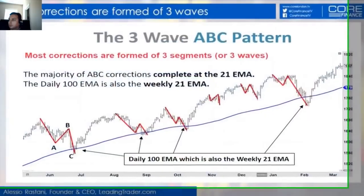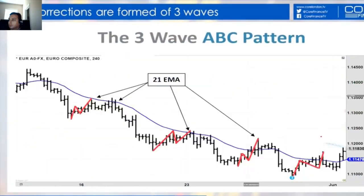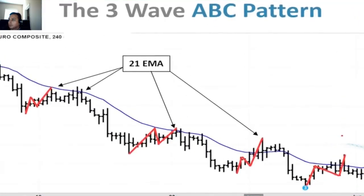By the way, the same thing applies in reverse. So if we look at the previous chart — if you get a downtrend, if the market's moving lower, be prepared for a corrective move, like a pullback or a bounce. That pullback or bounce usually takes you to either the 21 moving average or the 100 simple moving average.